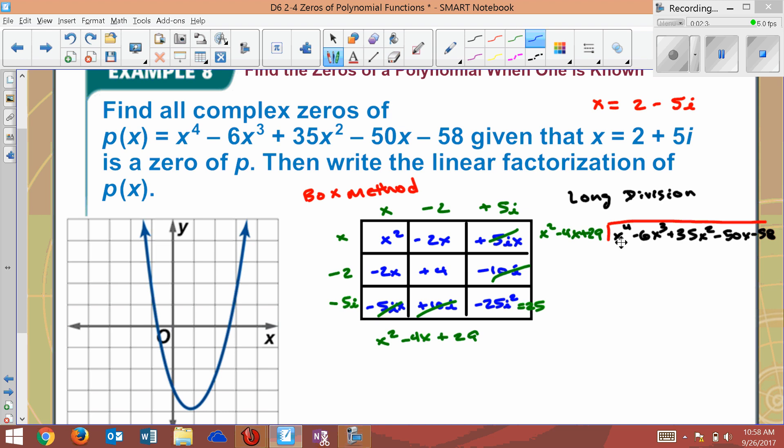Okay, the first question you ask yourself: what do I need to multiply x² by to get x⁴? Well, it's x². So if I multiply everything by x², I get x⁴ minus 4x³ plus 29x². Now remember, when you come behind, you always switch the signs. Long division. So that switches, that switches, that becomes negative. Those are gone. That becomes negative 2x³ and this now becomes 6x². Pull down the next term, minus 50x, and that is a plus.